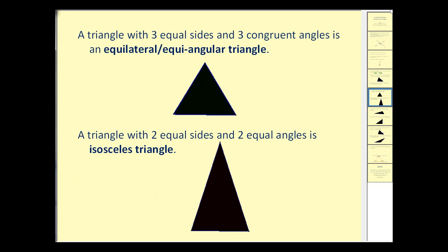A triangle with three equal sides and three congruent angles is an equilateral or equiangular triangle. So to show that these have three equal sides, we'll often use tick marks. And if they all have one tick mark, that's showing that they're all equal. And the same thing with the angles. If this has one arc, this has one arc, and this has one arc, we would assume that those three angles are congruent.